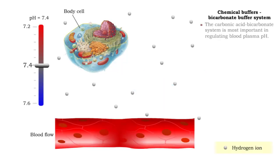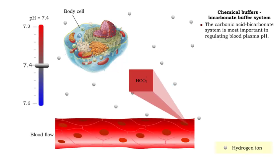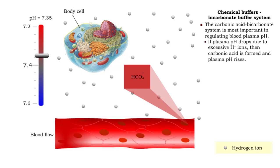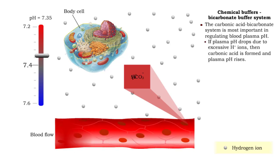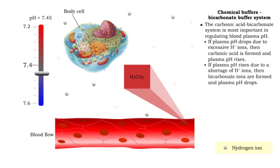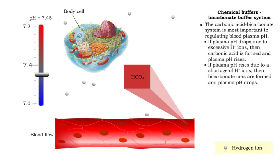The carbonic acid bicarbonate system is most important in regulating blood plasma pH. If plasma pH drops due to excessive hydrogen ions, then carbonic acid is formed and plasma pH rises. If plasma pH rises due to a shortage of hydrogen ions, then bicarbonate ions are formed and plasma pH drops.